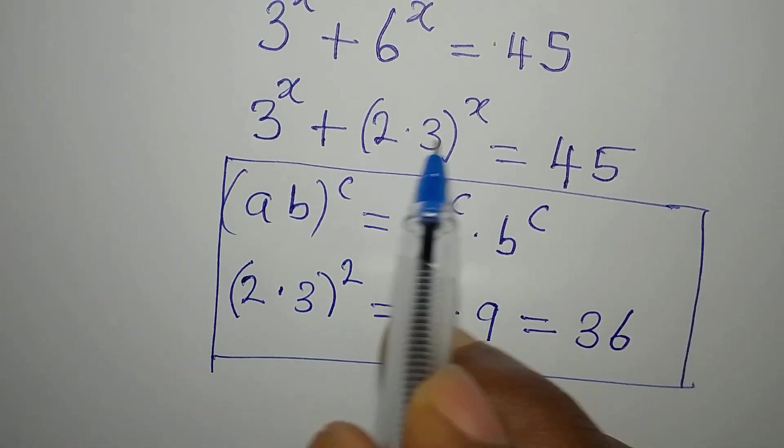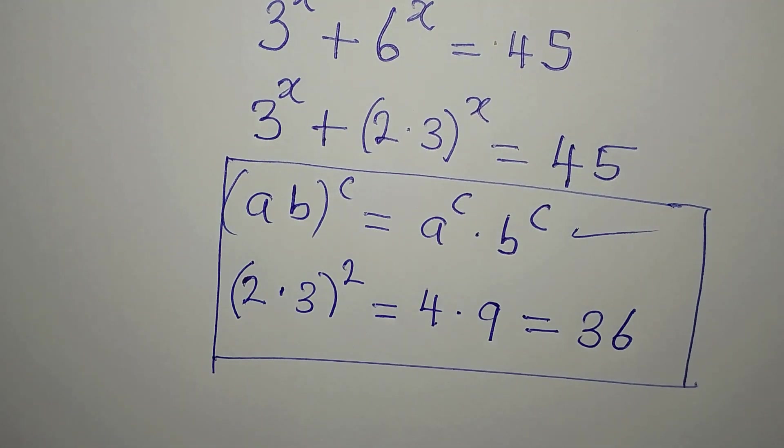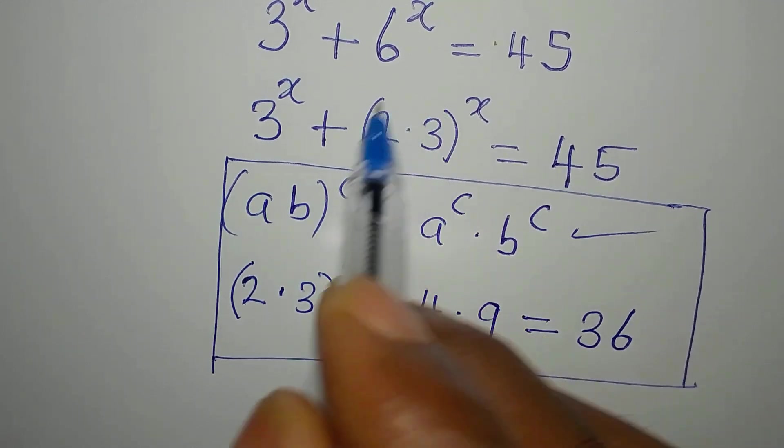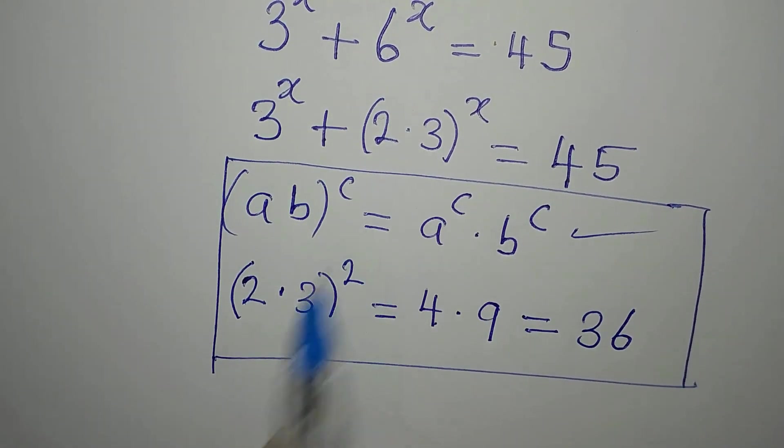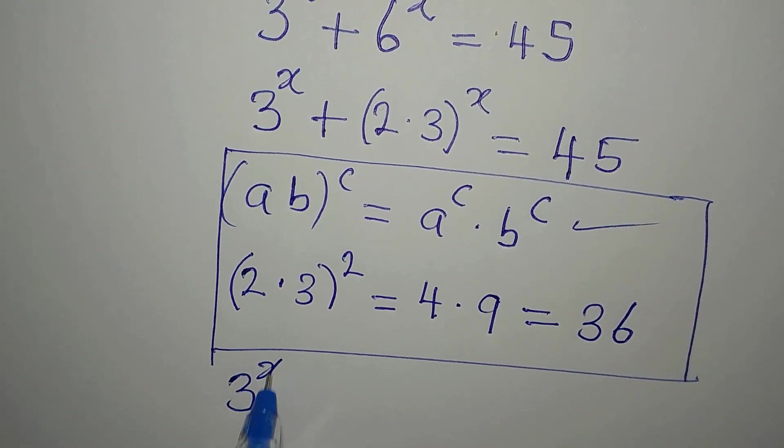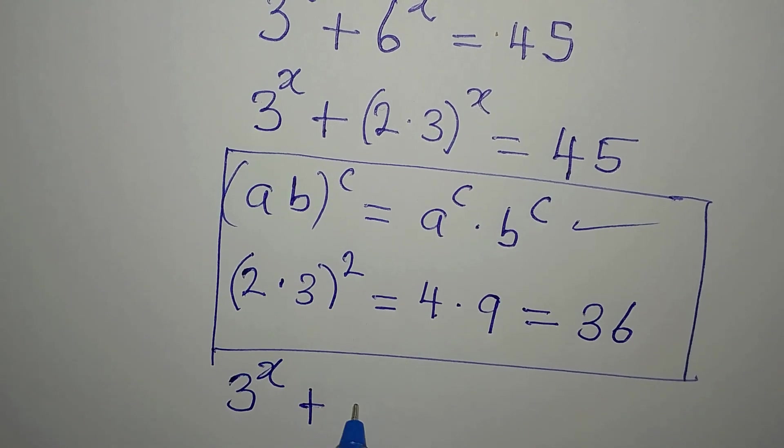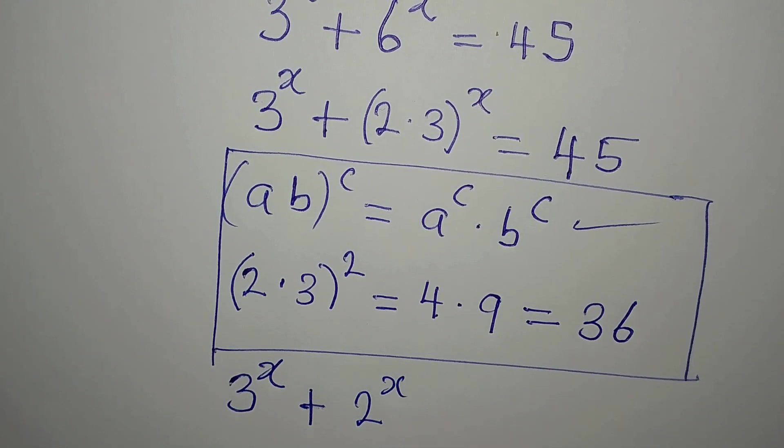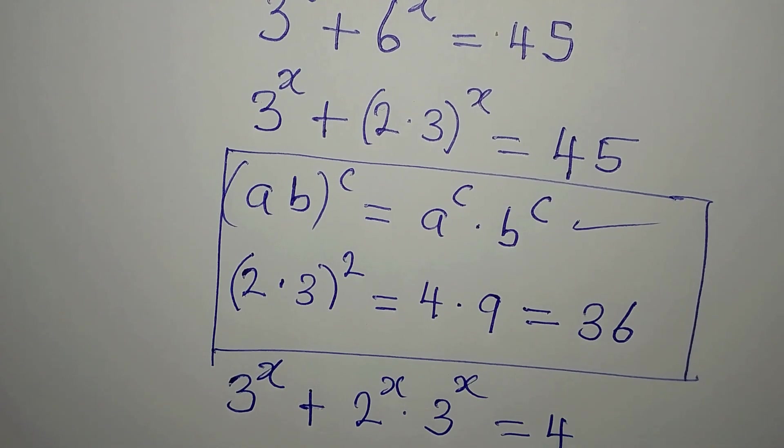So I'm going to use this right away to open this bracket. So we have 3 to the power of x plus 2 to the power of x multiplied by 3 to the power of x. This is equal to 45.